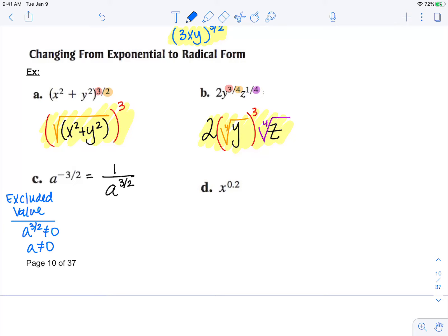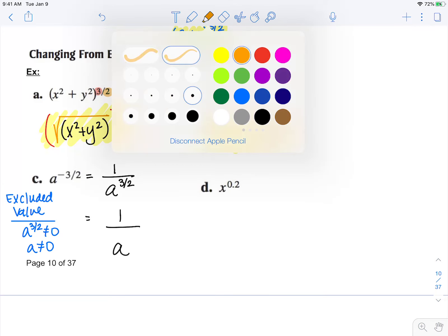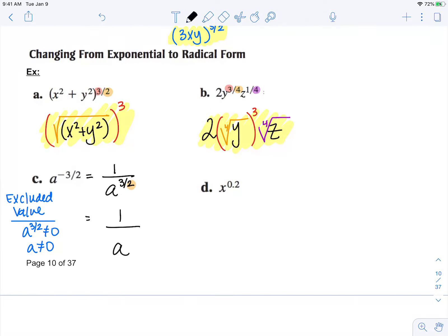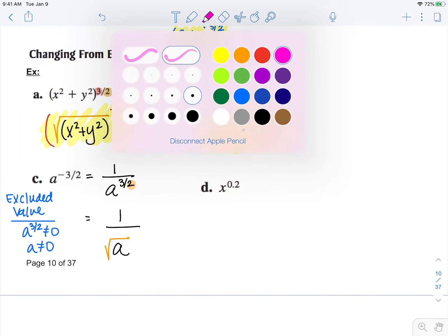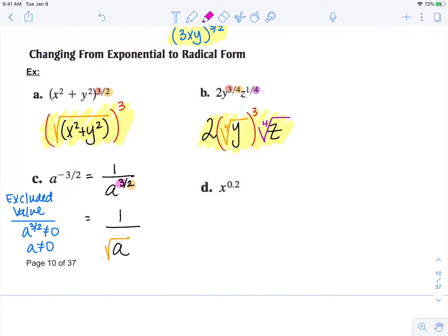So now I can rewrite this: I have 1 over a. Now my denominator is the index of my root, so it's square root, and the numerator of my exponent is the power. Remember, we have to keep this excluded value as part of our answer, and this is our simplified answer.